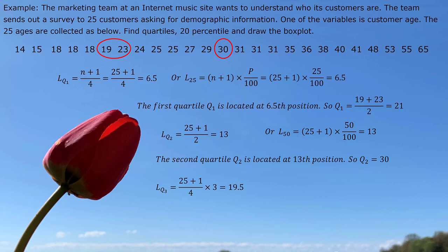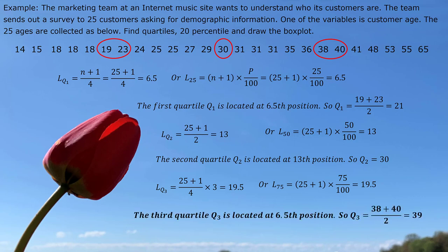Similarly, we can find the location for third quartile. We use 25 plus 1 divided by 4 and then multiply by 3, gives us the value 19.5, which is the location 19.5 between 19th and 20th position. So, we can come out to the third quartile by using the midpoint of these two values on 19th and 20th position. 38 plus 40 divided by 2 gives us the value 39.